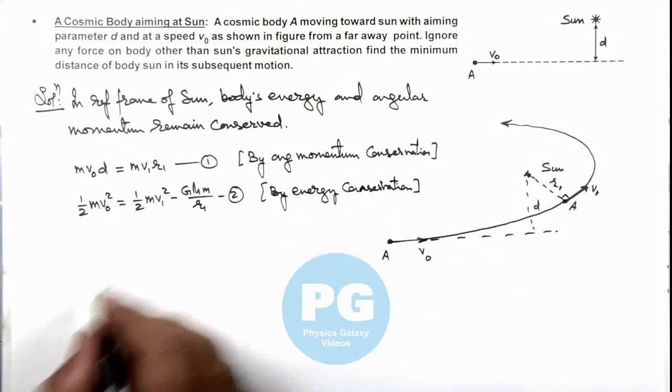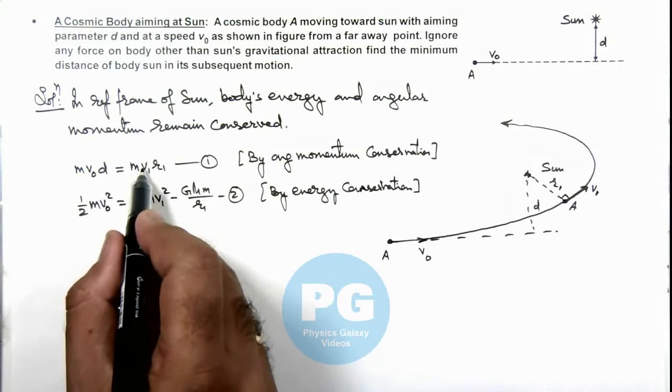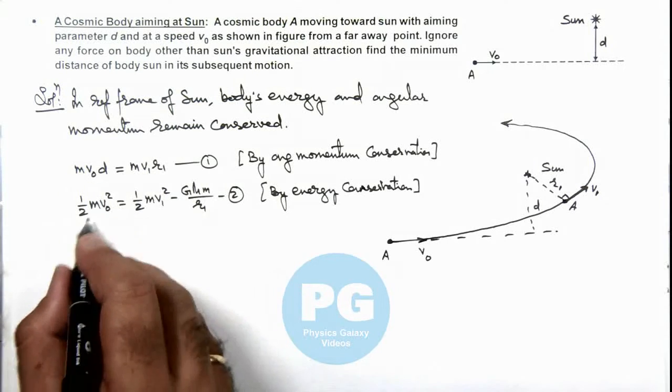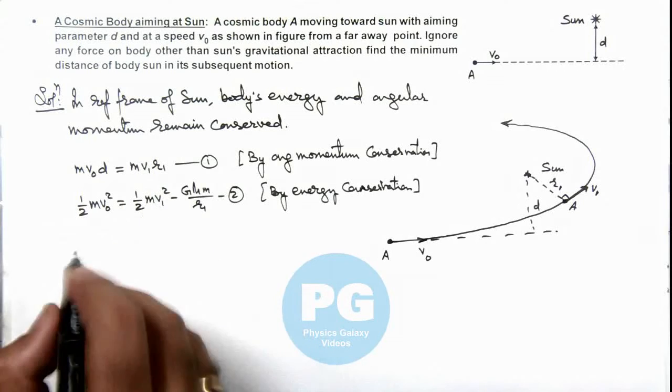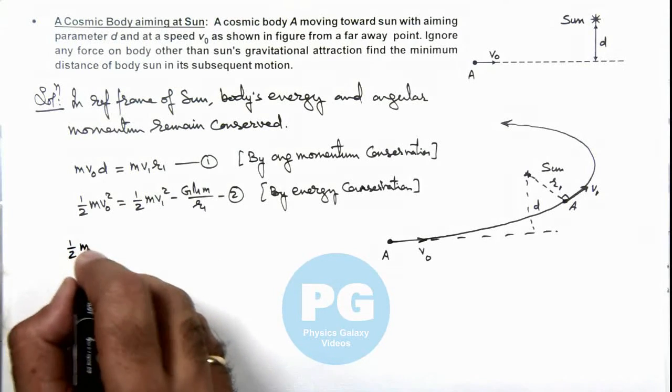Now from these 2 equations we can solve and get the value of r1. If we substitute the value of v1 here, first of all we can substitute v1 from equation 1 to equation 2, which is half m v not square.